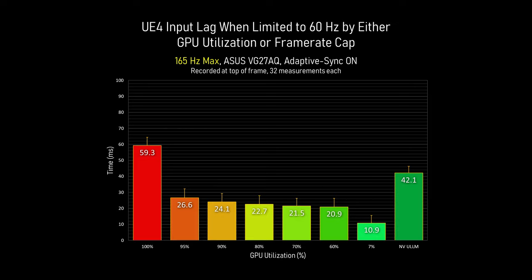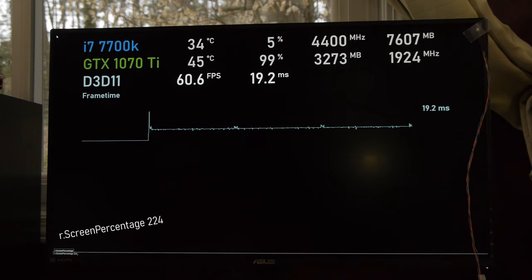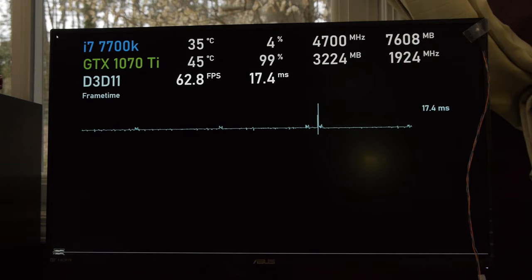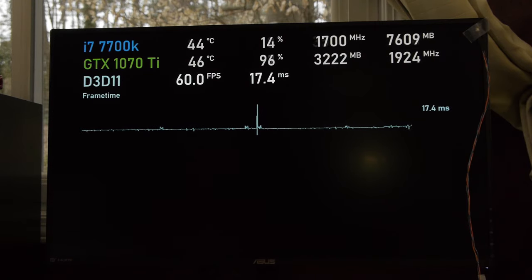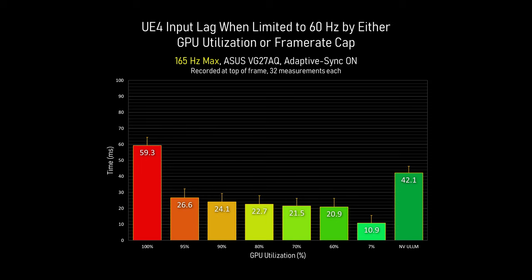That 100% GPU utilization caused input lag to jump to 60 milliseconds from the 10.9 milliseconds shown in the adaptive sync behavior slide. Dropping the screen percentage slightly from 230 down to 224 did nothing for GPU use — the frame rate just got higher, so I used the console to limit FPS back down to 60, and GPU utilization fell to 95%. Allowing the GPU a little room to breathe gives a huge drop in lag from 60ms all the way down to 27ms. Further reductions to 90%, 80%, and down to 60% have very slight decreases in input lag. The very best results only come when the GPU is essentially doing nothing. The key is to not let your GPU constantly hit max utilization.